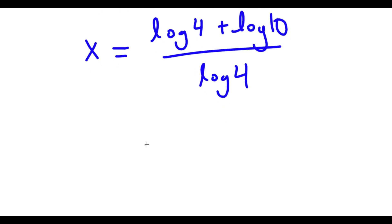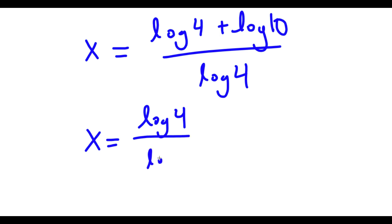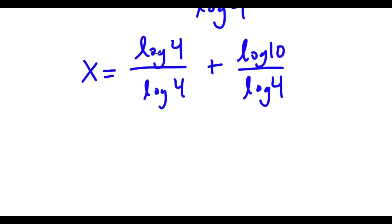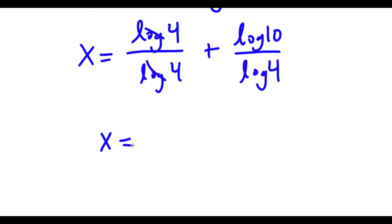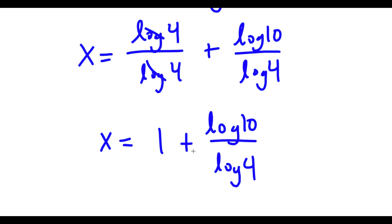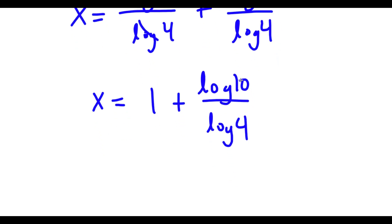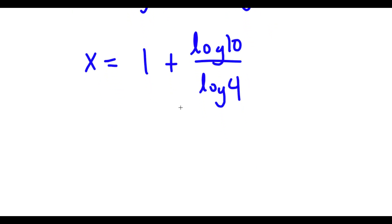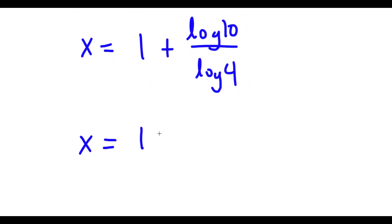Now, log 4 plus log 10 over log 4 — this is the same thing as log 4 over log 4 plus log 10 over log 4. And log 4 over log 4, these two cancel out. So now I have x is equal to 1 plus log 10 over log 4. And log 10 is equal to 1, so now I have x is equal to 1 plus 1 over log 4.